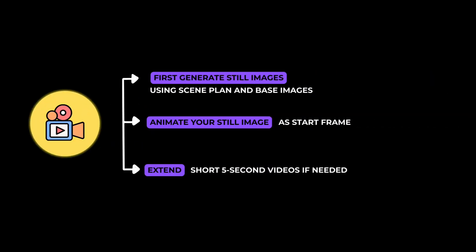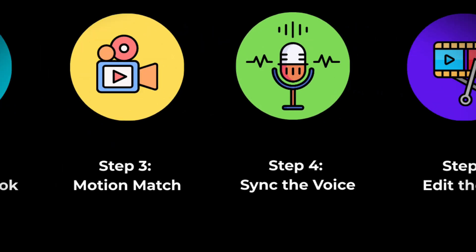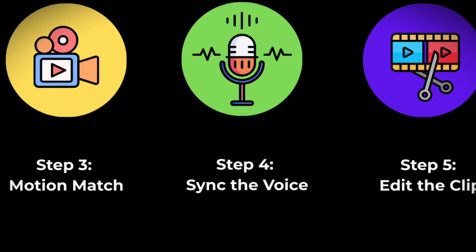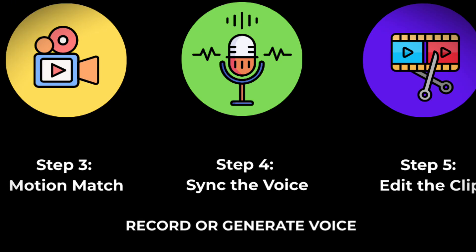It also makes revisions easier. If one scene looks off, you regenerate just the still instead of rebuilding the whole sequence. Step four is voiceover plus narration. Take the exact narration and character lines you wrote in step one, and generate the voiceovers scene by scene in Gemini 2.5. Keep it modular — one audio file per scene, and separate files for character lines if you have them. That way, you can swap a single line, fix pacing, or regenerate one scene without touching the whole video.